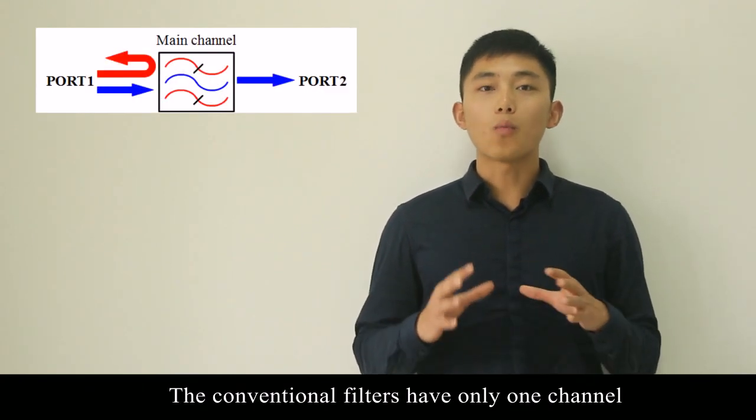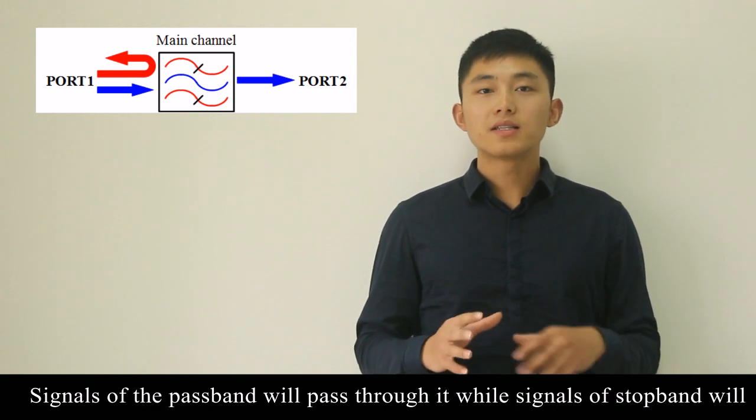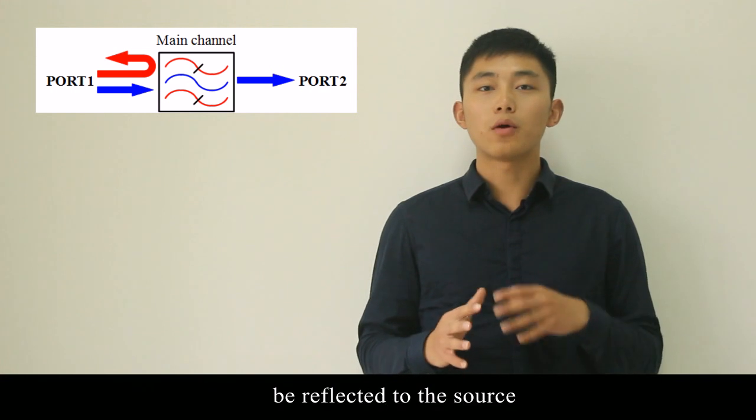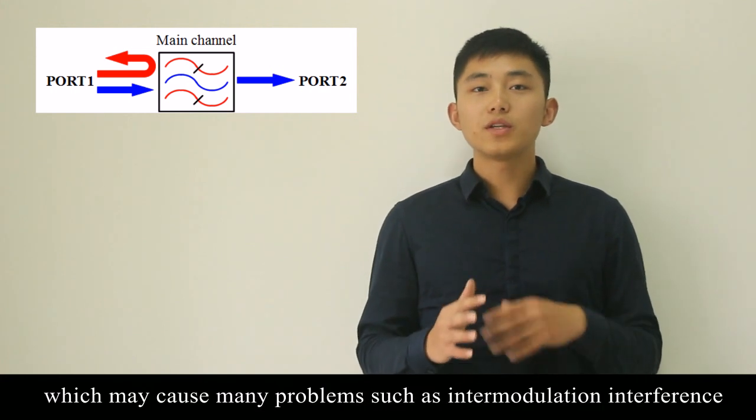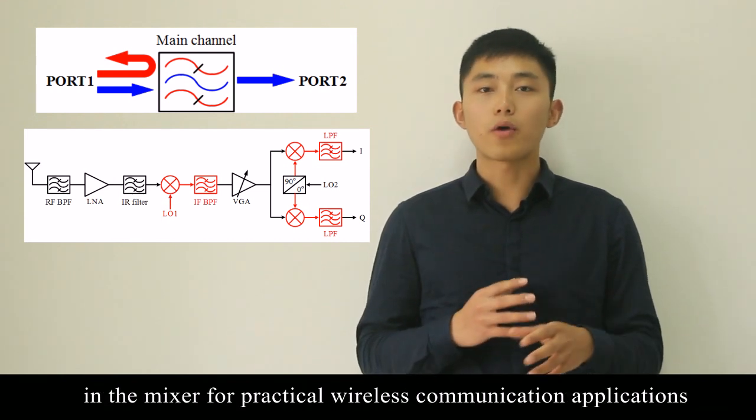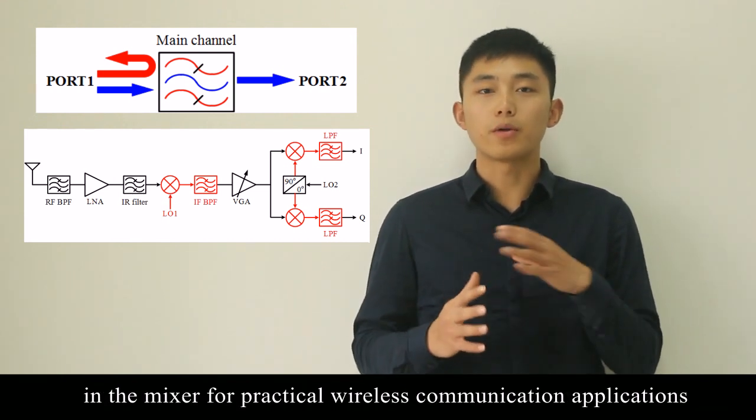The conventional filters have only one channel called the main channel. Signals of the passband will pass through it while signals of the stopband will be reflected to the source, which may cause many problems such as intermodulation interference in the mixer for practical wireless communication applications.